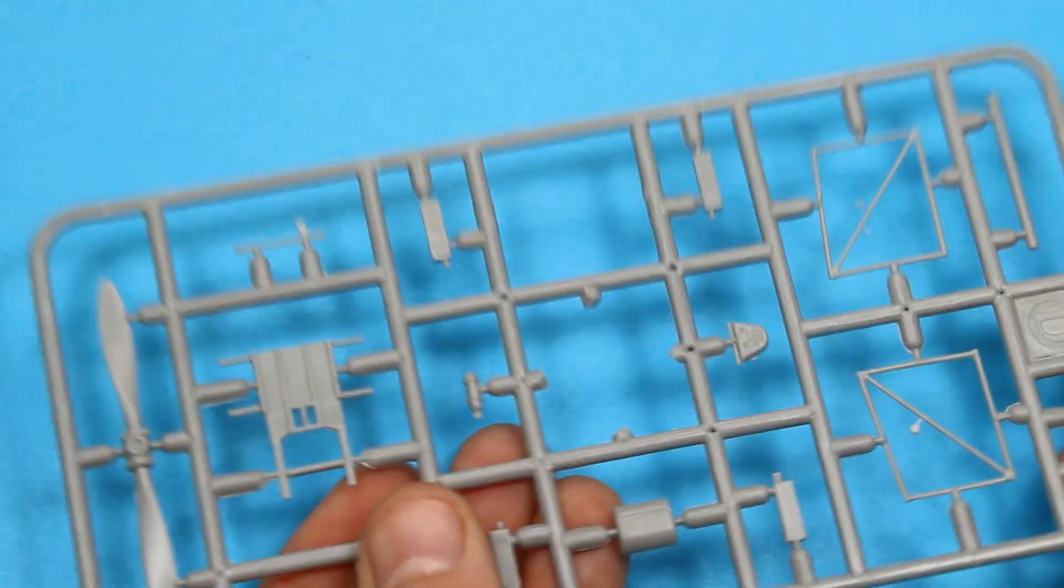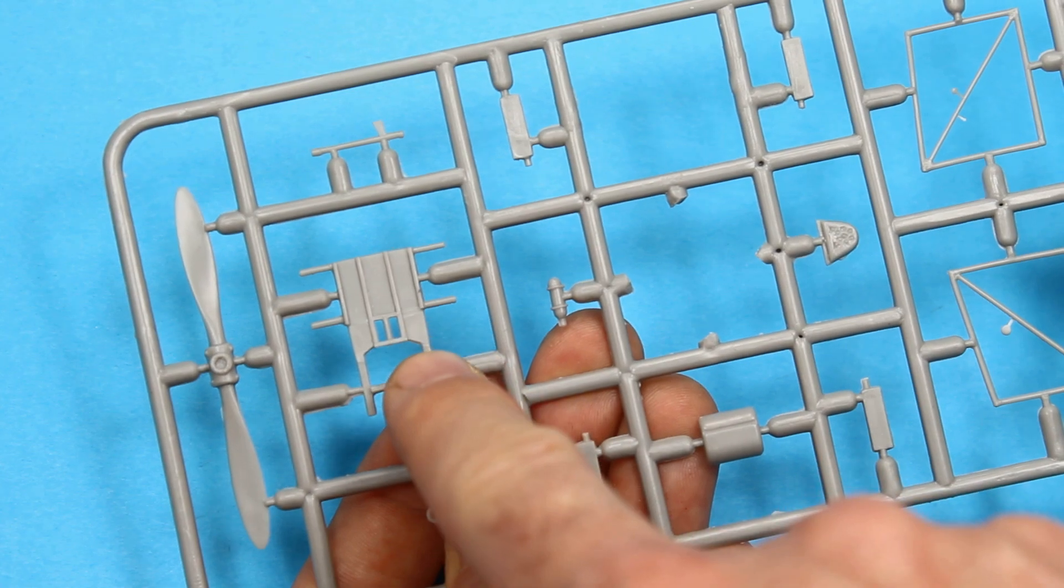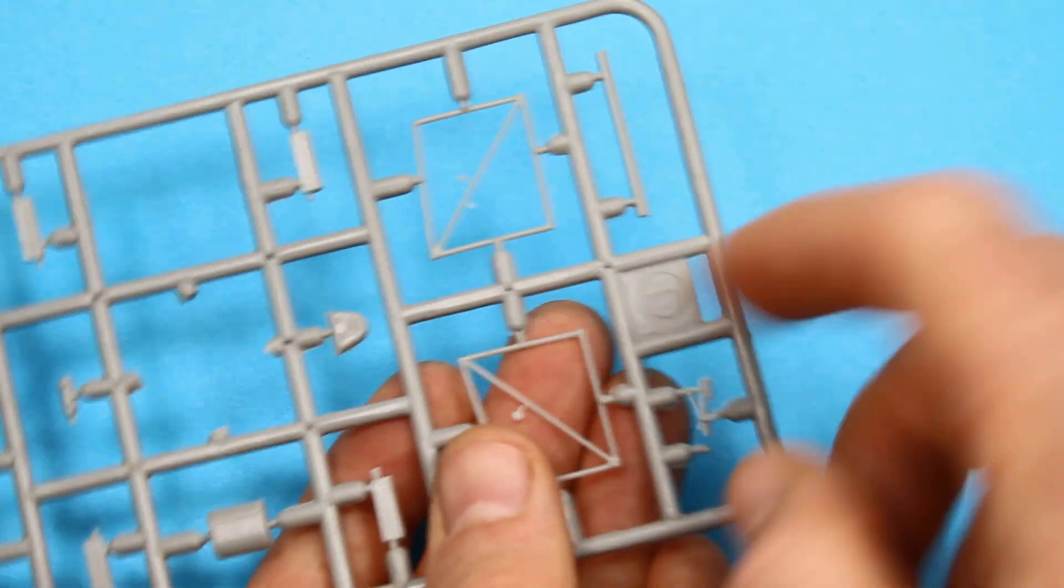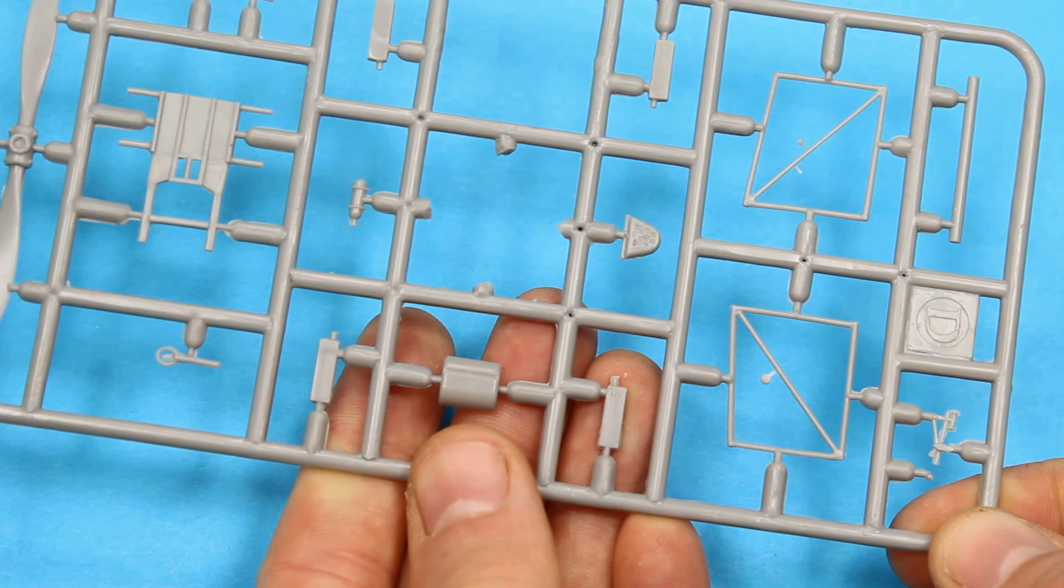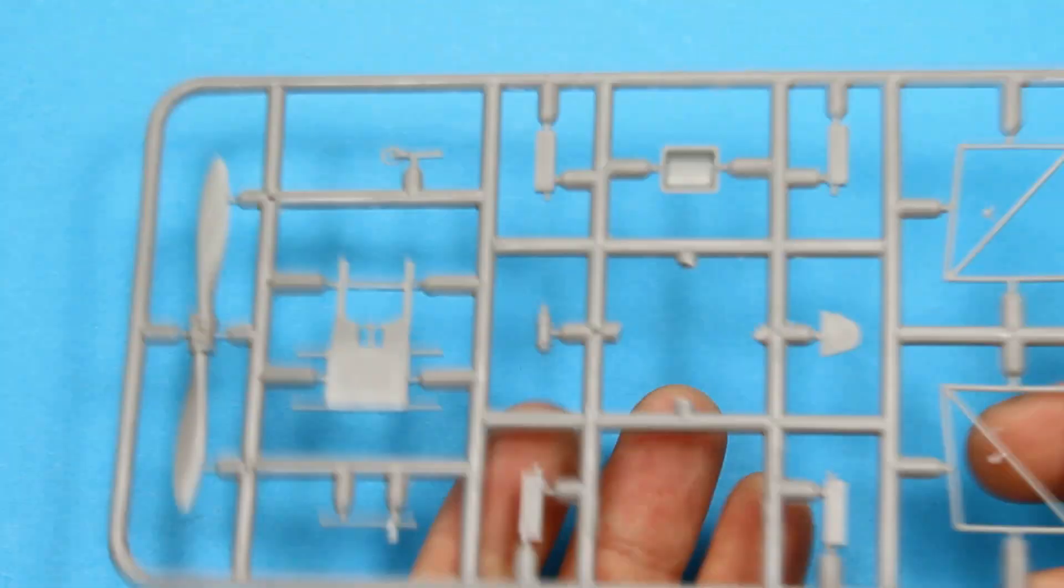Then we've got some more plastic. We've got the cockpit floor, propeller, sidewall detail as well for the framing, a few other small parts going on there. All looks very nice.